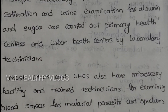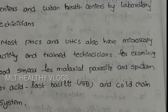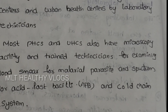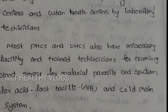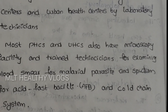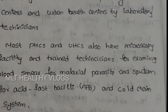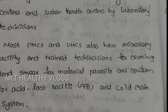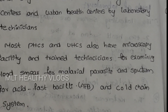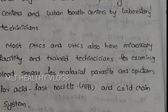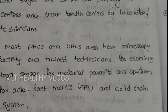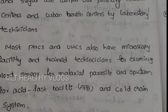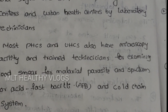Most primary health centers and urban health centers have microscopy facilities with trained technicians who examine blood smears for malaria parasites. Primary level urban labs in hospitals also perform sputum testing for acid-fast bacilli (AFB), and maintain a cold chain system.